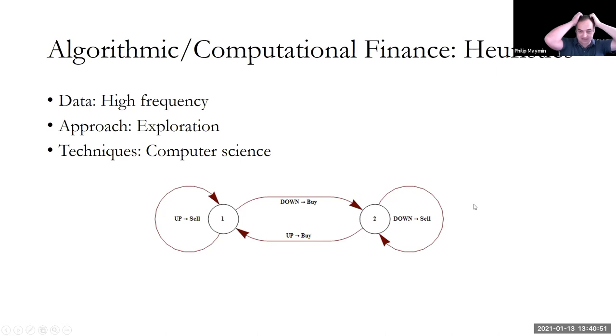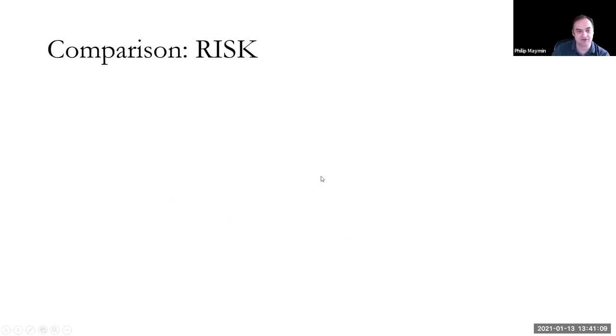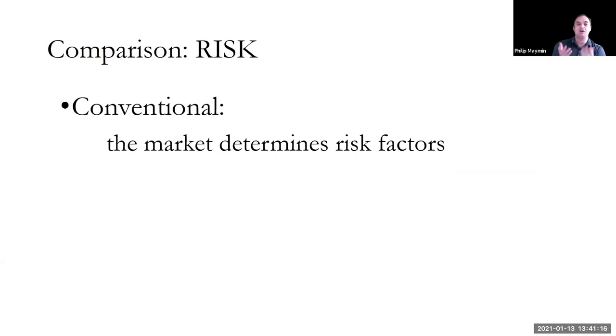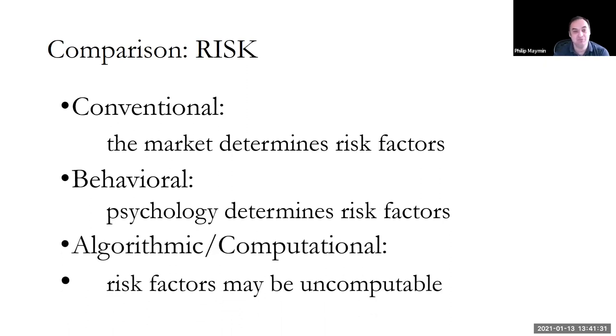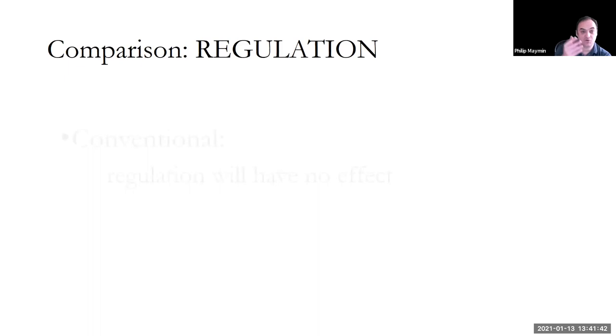Now, what is algorithmic or computational finance? How does it work? It works through heuristics. It works through po Wolframsky, from the bottom up rather than the top down. The data tends to look at as very high frequency. The approach is to create simple rules and see, explore, where do they go? The techniques are borrowed from computer science. I'll give you three comparisons just so you can understand the difference. In terms of risk, the conventional approach is that the market determines the risk factors. Fine. The behavioral approach is that psychology determines the risk factors. Okay. What would be the algorithmic or computational approach?